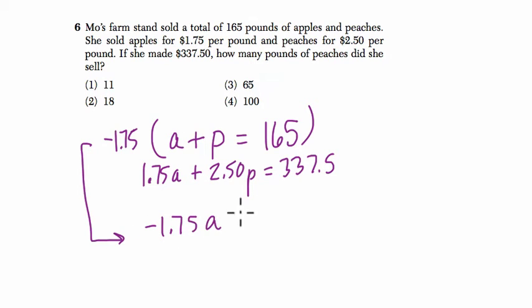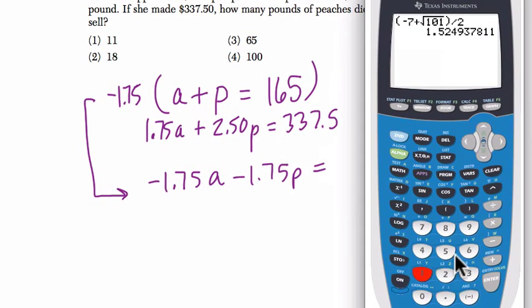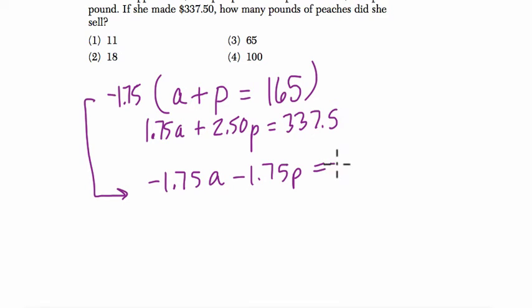Negative 1.75A minus 1.75P equals 165 times 1.75. I know it's negative, but I'm too lazy to add the negative sign. I'll just flip this result. It's negative 288.75.